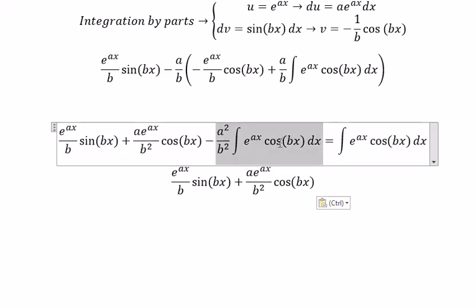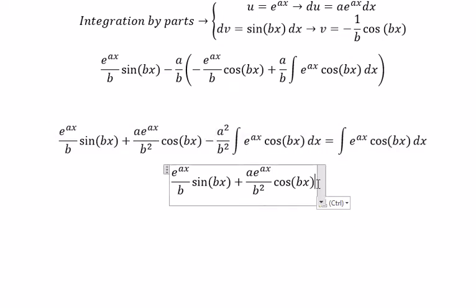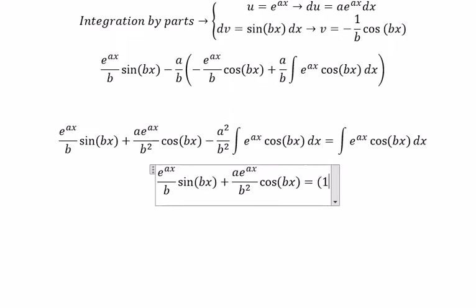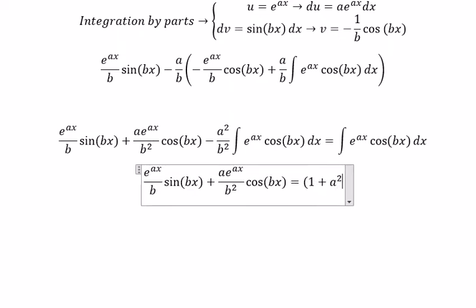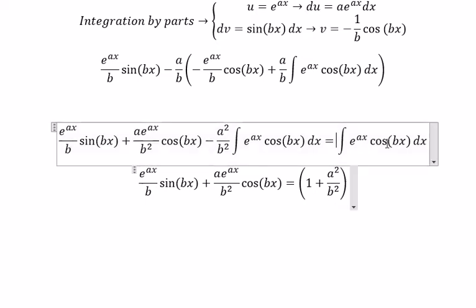Next, we move this one to the right. So you get 1 plus a squared over b squared, and we have this integration.